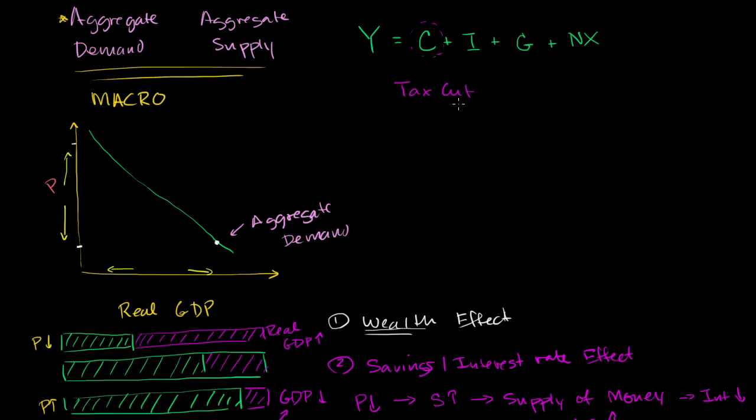But if you had this tax cut, all of a sudden people would have more money in their pockets and they might be able to demand more. That would cause consumption to go up and it would make aggregate demand go up. So if you have a tax cut, something like that for consumers, that might shift aggregate demand to the right.